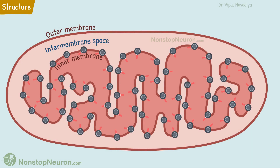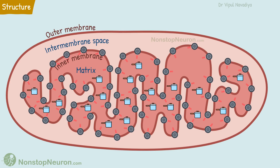The intermembrane space is the space in between the two membranes. The matrix inside the inner membrane contains the enzymes related to energy metabolism. The mitochondria also contain their own genome in the form of circular DNA strands, which encode some of the mitochondrial proteins.